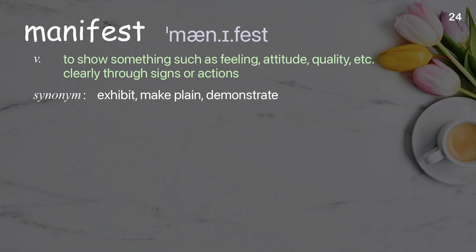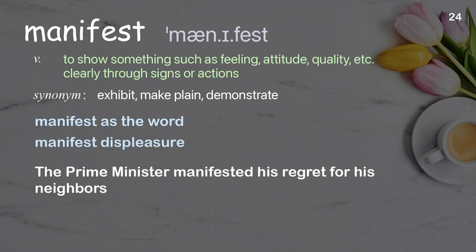Manifest: To show something such as a feeling, attitude, or quality clearly through signs or actions. Examples: Manifest as the word, manifest displeasure. The prime minister manifested his regret for his neighbors.